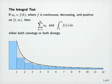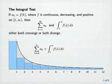Now, all of these rectangles except the first one lie inside the region under the graph of f. Therefore, we can conclude that the sum from k equals 2 to infinity of a sub k is less than the integral from 1 to infinity of f of x dx. Consequently, if the improper integral is finite, then the series is finite.